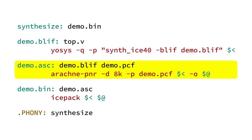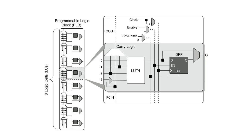The second step in the synthesis process is performed by Arachne-PNR, and this tool's job is to provide three key functions: packing, placing, and routing. The packing process involves taking the logic cells declared in the BLIF file and packing them together into logic tiles, because in the iCE40 each logic tile contains eight logic cells. We want to find the most optimal arrangement, reducing scattering of our circuitry by co-locating related functionality within a small number of tiles.